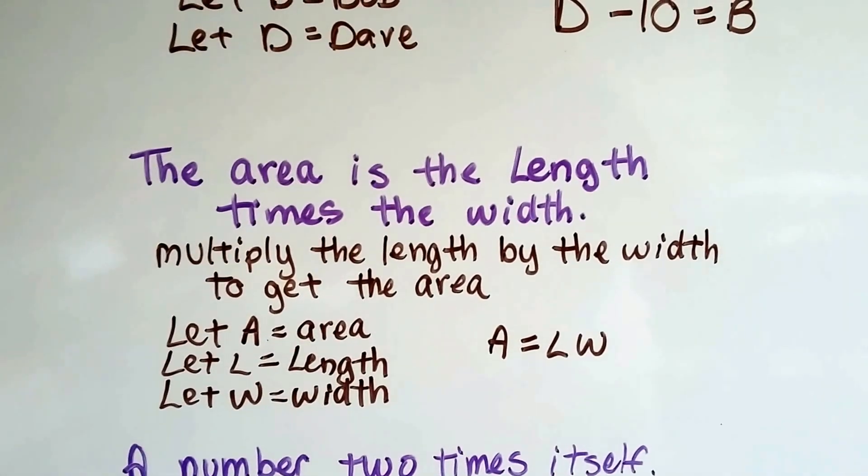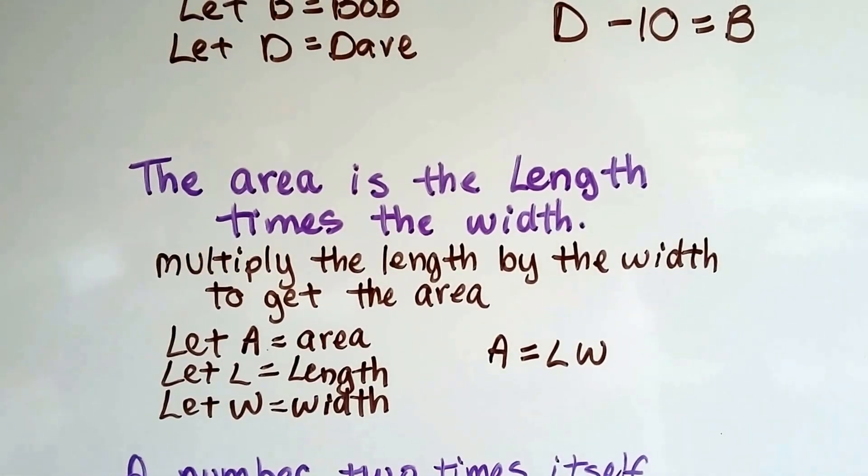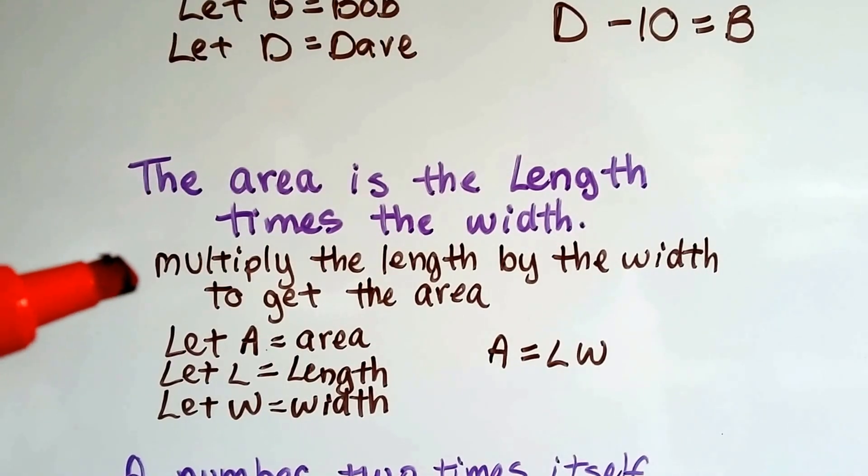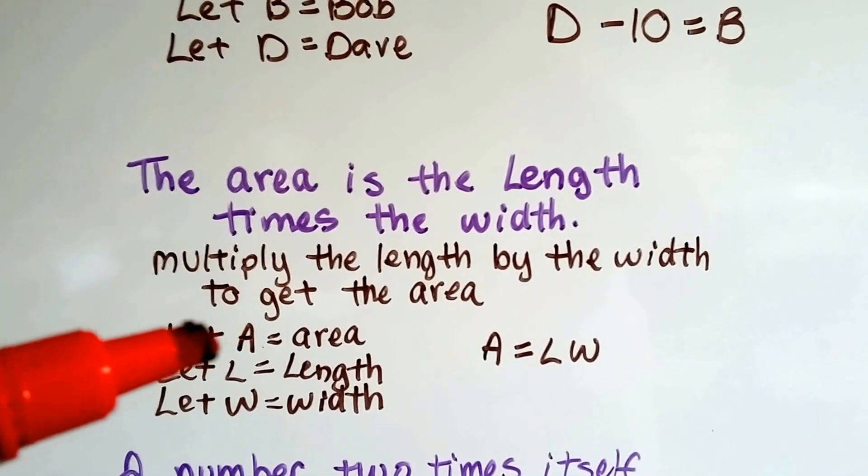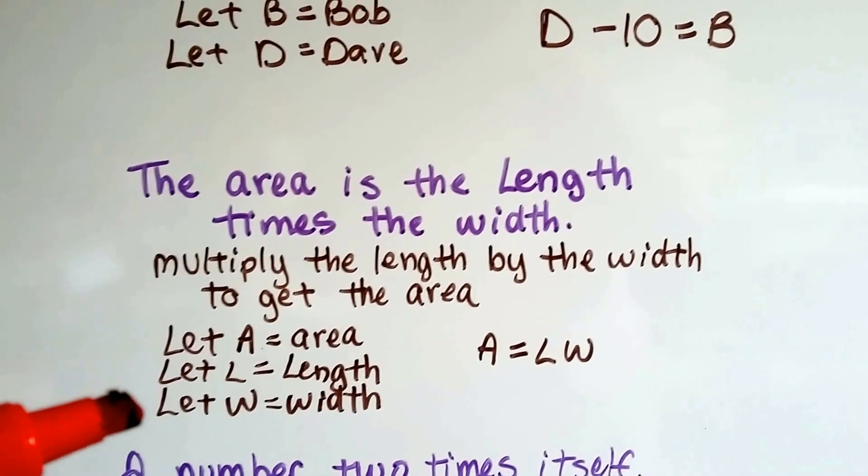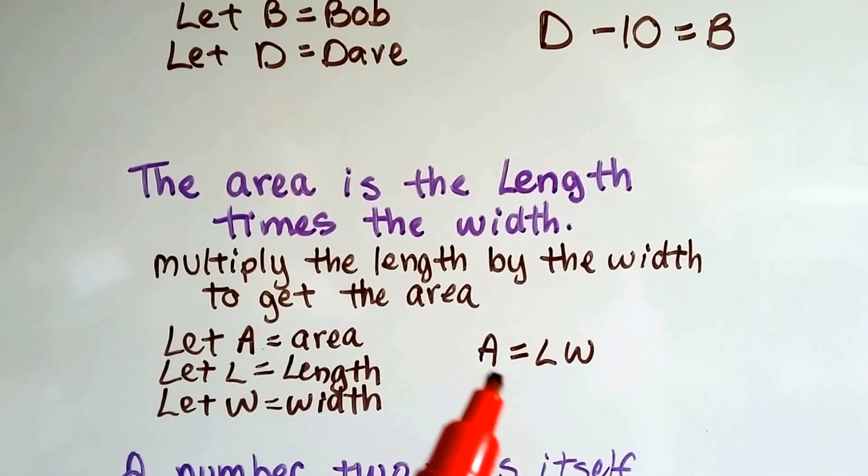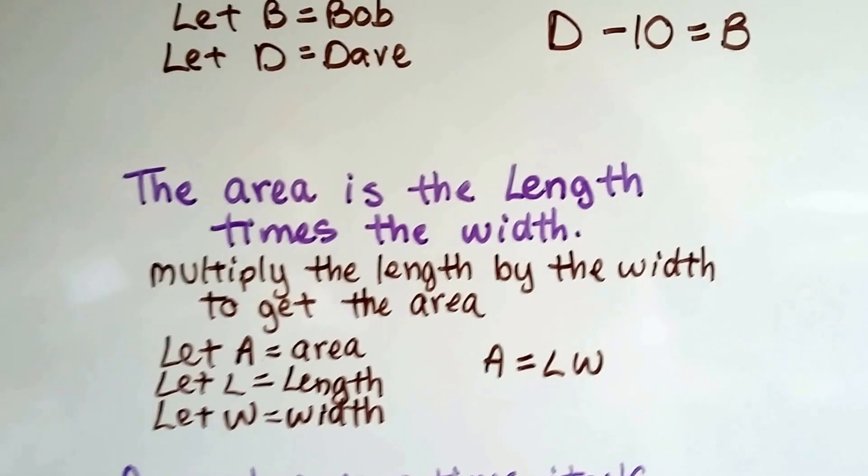This one might look familiar. The area is the length times the width. We multiply the length by the width to get the area. So if we let A be area, L be length, and W be width, we come up with this. Area equals length times width.